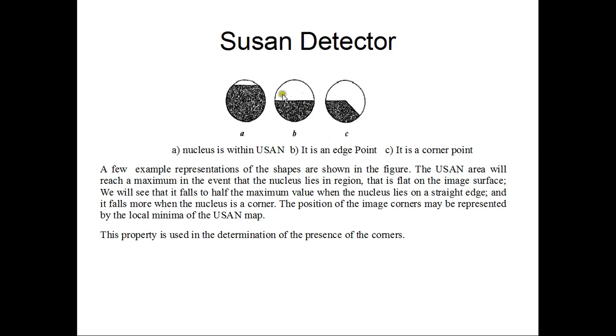Here we can see an example of how a pixel is divided. The representations of the figures are shown above. The USAN area will reach a maximum in the event that the nucleus lies in the region that is flat on the image surface. We will see that it falls to half the maximum value when the nucleus lies on a straight edge and it falls more when the nucleus is a corner. The position of the image corners may be represented by the local minima of the USAN map. This is the main property we use in the determination of the presence of the corners.